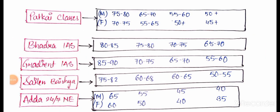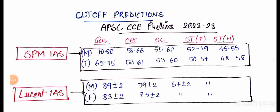These are the cutoffs by different coaching institutes. I have taken only seven institutes which are very important and famous. Let's begin. First, let's see SPM IAS Academy. They have said general male 70 to 80 and female 65 to 75, then obviously OBC, SC, ST plains, ST hills accordingly. They have categorized everything.